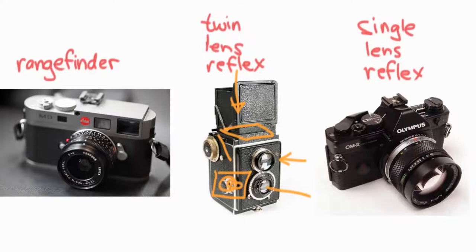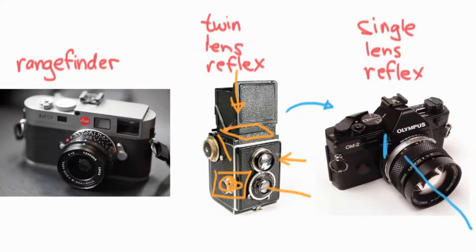At some point someone decided to try to get rid of the second lens, and they did with the single lens reflex. We've talked about this already in the how-a-camera-works lesson: the light comes in, hits a mirror before it hits the film, gets bounced up into a prism, and then shot back out the viewfinder.